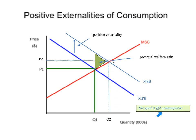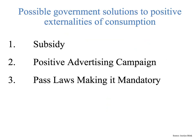The goal for the government is to figure out ways of getting consumption from the current point out to point A — out to Q2. So the goal is Q2 consumption. How could the government do that? We're going to look at three different ways they could take advantage of this welfare gain: possible government solutions to positive externalities of consumption. They could subsidize firms and provide health care, they could run a positive advertising campaign, and they could make it mandatory.